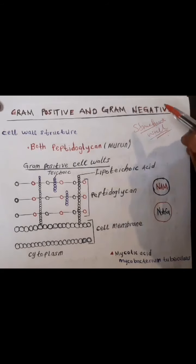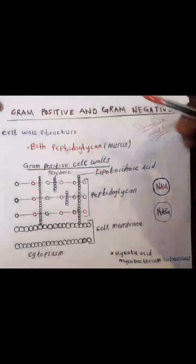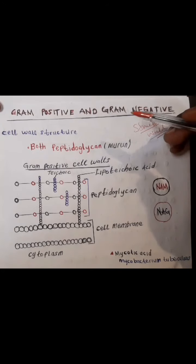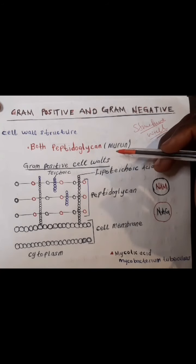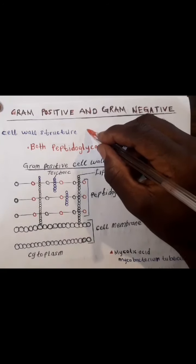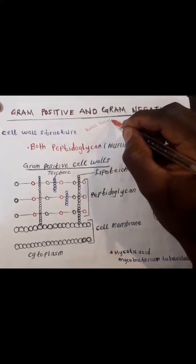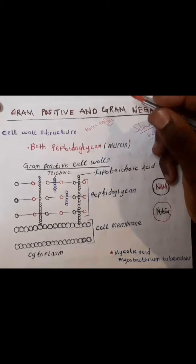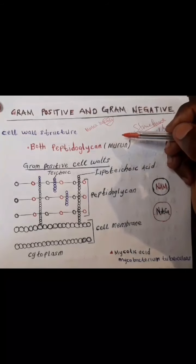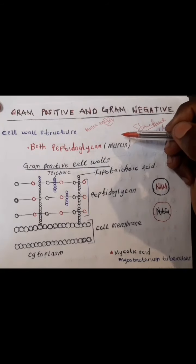We are going to start with gram-positive bacteria. What makes a bacterium classified as gram-positive? It is because of the makeup of the cell wall. So how does the cell wall of gram-positive bacteria differ from that of gram-negative bacteria?